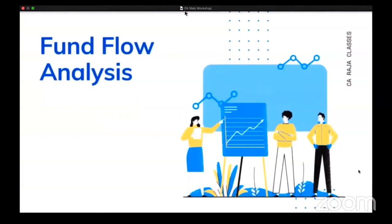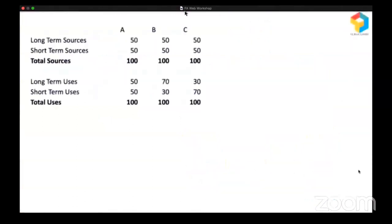I need your participation here. Look at this. There are three companies — A, B, and C. You have information about their long-term sources, short-term sources, and total sources. You also have information about their long-term uses, short-term uses, and total uses. I want you to digest this information, spend some time, and then identify which company is in trouble. Is it company A, company B, or company C?